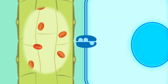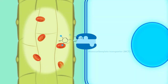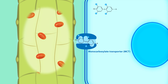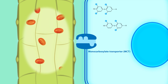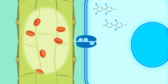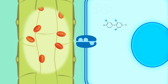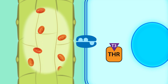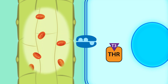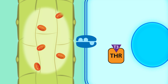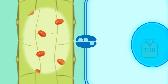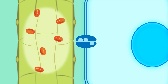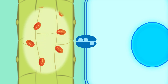T4 and T3 are taken up by cells via the monocarboxylate transporter. Inside these cells, T4 is converted to T3 by the deiodinases. T3 then binds the nuclear receptor, which promotes the translocation of T3 into the nucleus. We'll talk more about the role of T3 in the micro-lesson titled Thyroid Hormone Function.